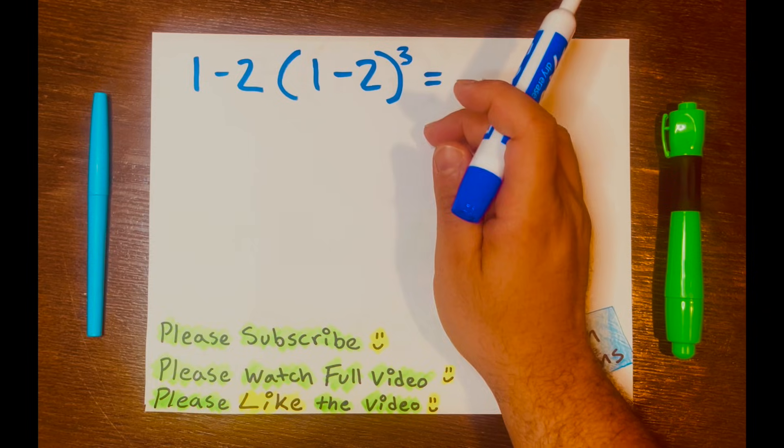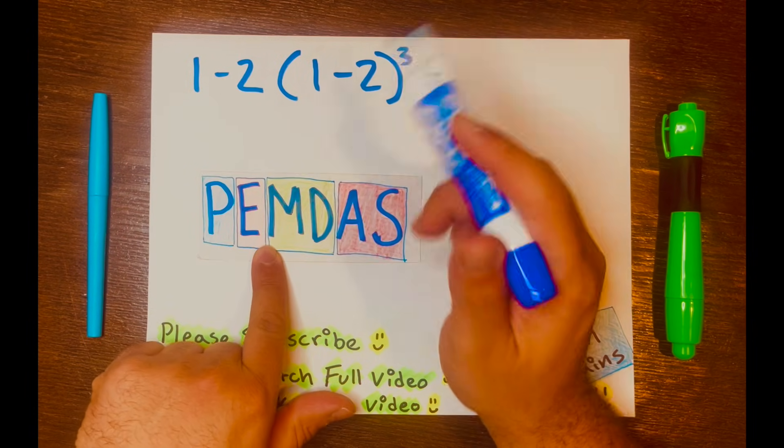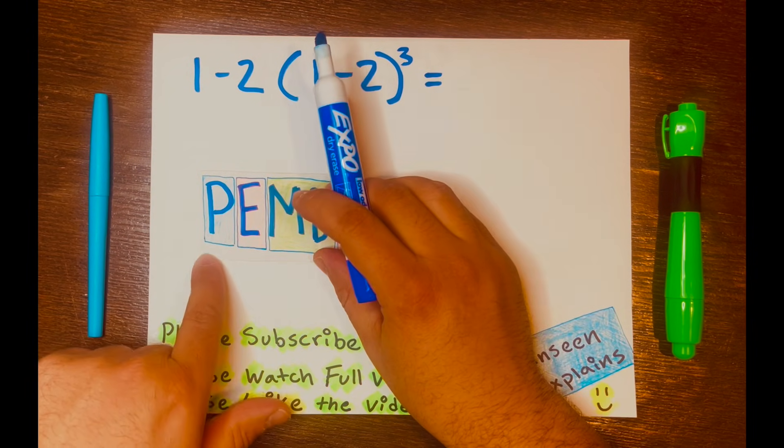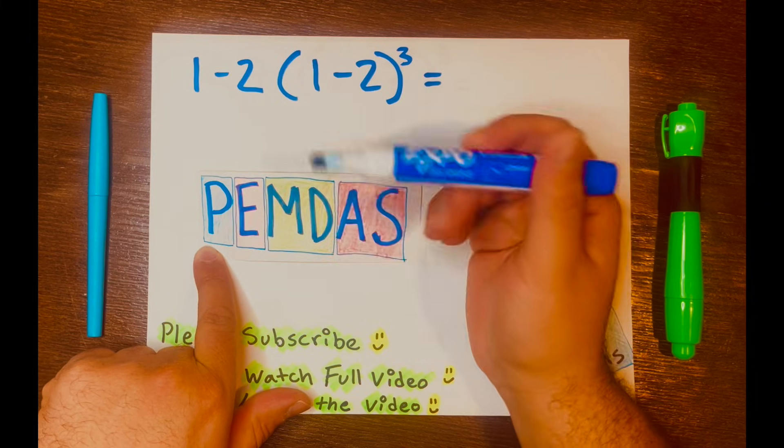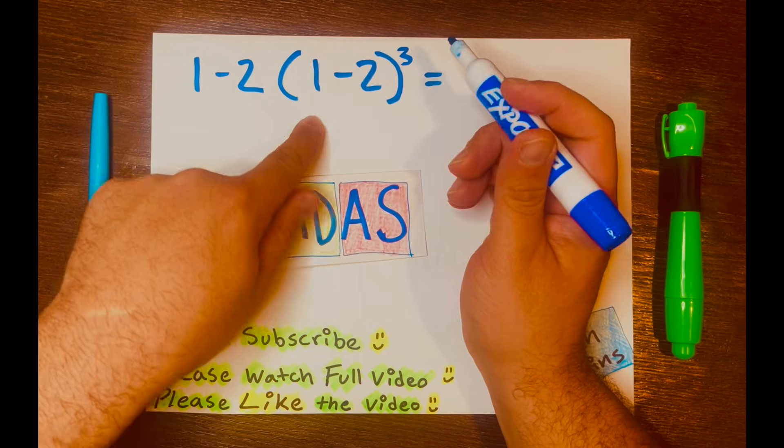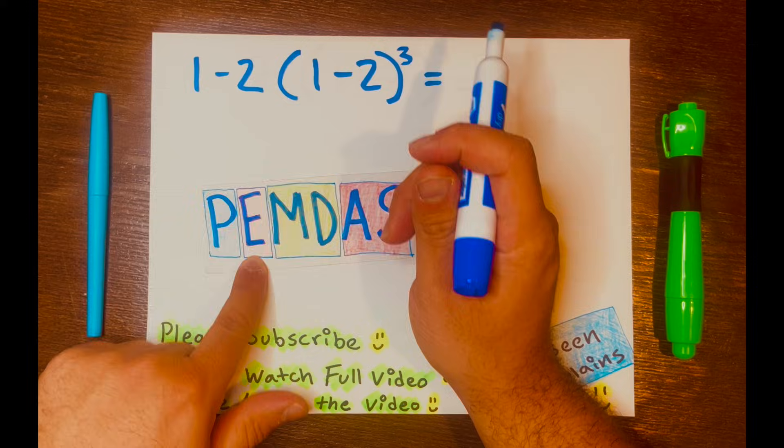To start solving this problem, I will look at PEMDAS, and PEMDAS is telling me that parentheses, being the highest level in PEMDAS, will go first, and then the exponent will go second.